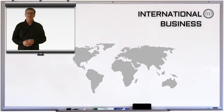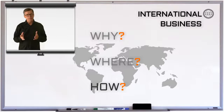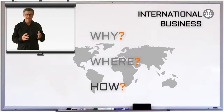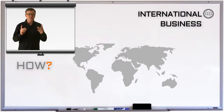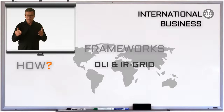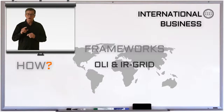A question was raised at the start of the session: if a company decides that they're capable and committed, and if they have identified a potential market to enter, how should they operate and organize that business? This is a critical and challenging question, but there are two frameworks that can help: the OLI framework and the IR grid. Let's start with the OLI framework.